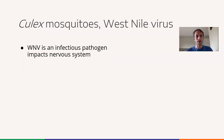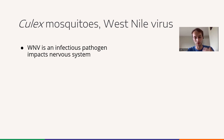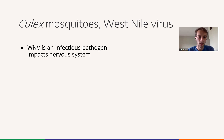Today I'm going to talk about Culex mosquitoes and West Nile virus. West Nile virus is an infectious pathogen that impacts the nervous system. For most people who get West Nile virus it might cause a fever or a rash, and in severe cases it can lead to hemorrhagic fever, where the brain is bleeding, or meningitis, where the nervous system stiffens up and you'll have a very stiff neck. These complications can be fatal, and this is the motivation of this work.